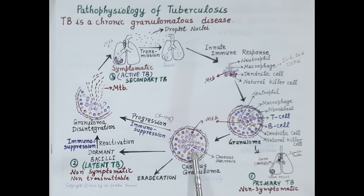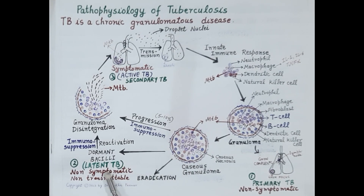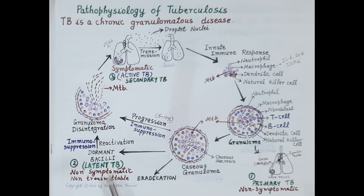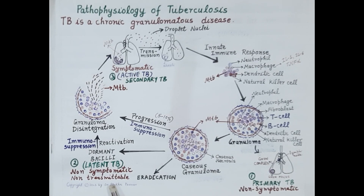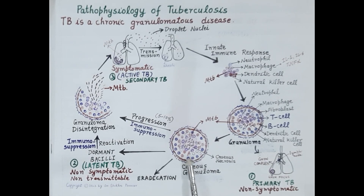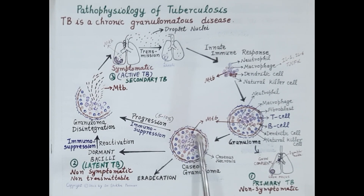It is very important to understand that even though most bacteria are killed, some bacilli remain alive in the center of this granuloma. There are three possibilities: first, in most cases, the bacilli remain dormant and do not multiply — this is termed as latent tuberculosis. The patient does not show symptoms and cannot transmit the disease. These bacilli can remain dormant throughout the life of the individual.